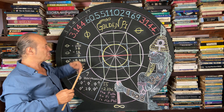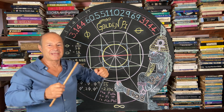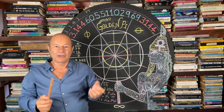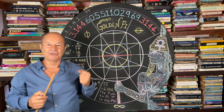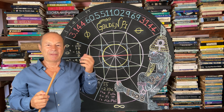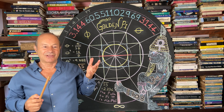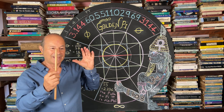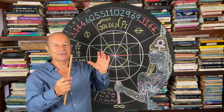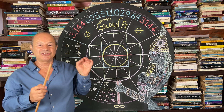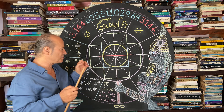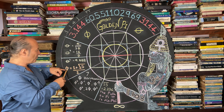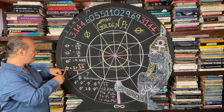What I would like to show you is that when we study all the polygons — like triangles, squares, pentagons and hexagons — if you look closely inside the harmonics of the circle, they're all mathematically and geometrically based on a thing called the golden ratio.